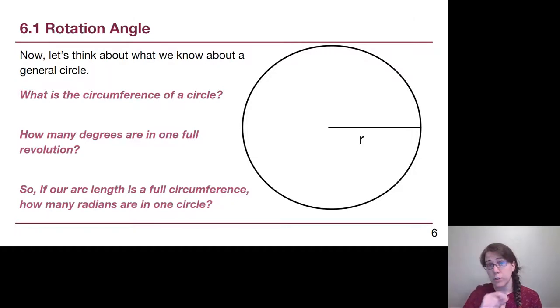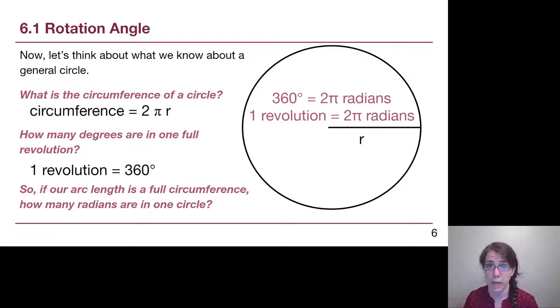How many degrees are in one full circle? One circle is one revolution of angle, and there would be 360 degrees of angle. So if we thought about our definition of angular distance theta, if the arc length is a full circumference 2 pi r divided by radius, then r on top and bottom cancels, and the full circle in terms of radians would be 2 pi radians.